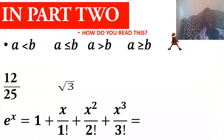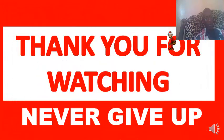For the next class in part 2, this is what we are going to see: how to read A less than B, A less than or equal to B, A greater than B, or A greater than or equal to B, 12 over 25, square root of 3, etc. For the next class, goodbye, thank you for watching, never give up, and join me on Google Classroom, please.